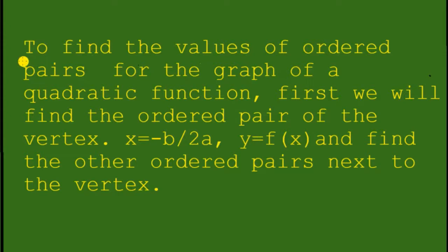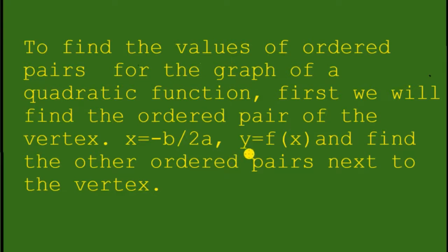To find the values of ordered pairs for the graph of a quadratic function, first we will find the ordered pair of the vertex. We will find the value of x equals negative b over 2a, and the value of y is equal to f of x. Then we find the other ordered pairs next to the vertex.